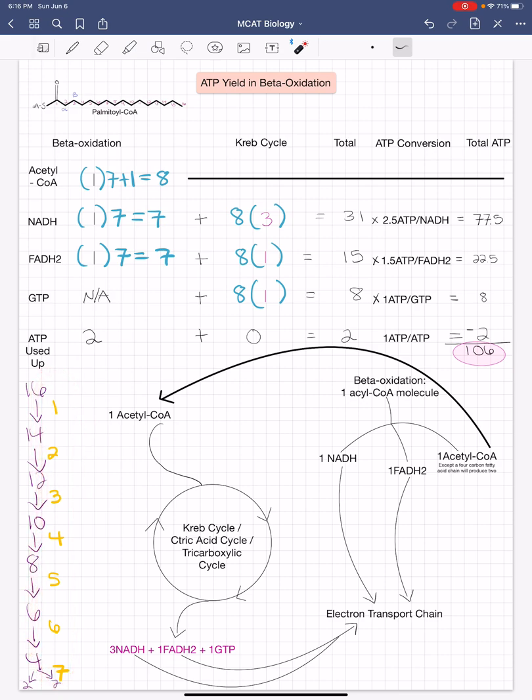Therefore, we need to multiply the number 7 to the products that are produced from beta oxidation, with the exception of acetyl CoA, in which we will add an additional molecule. So we have 7 molecules of NADH, 7 molecules of FADH2, and 8 molecules of acetyl CoA.